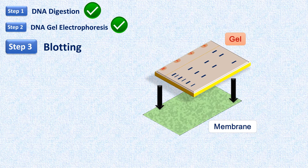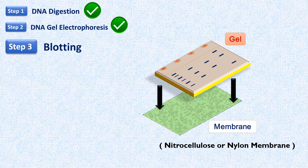In the third step, blotting is done — the DNA fragments are transferred from the gel to a suitable membrane. This membrane can be a nitrocellulose membrane or a nylon membrane. Nowadays, the most preferred membrane for such transfer of nucleic acids is nylon membrane, because it has high tensile strength and better binding capacity for nucleic acids.